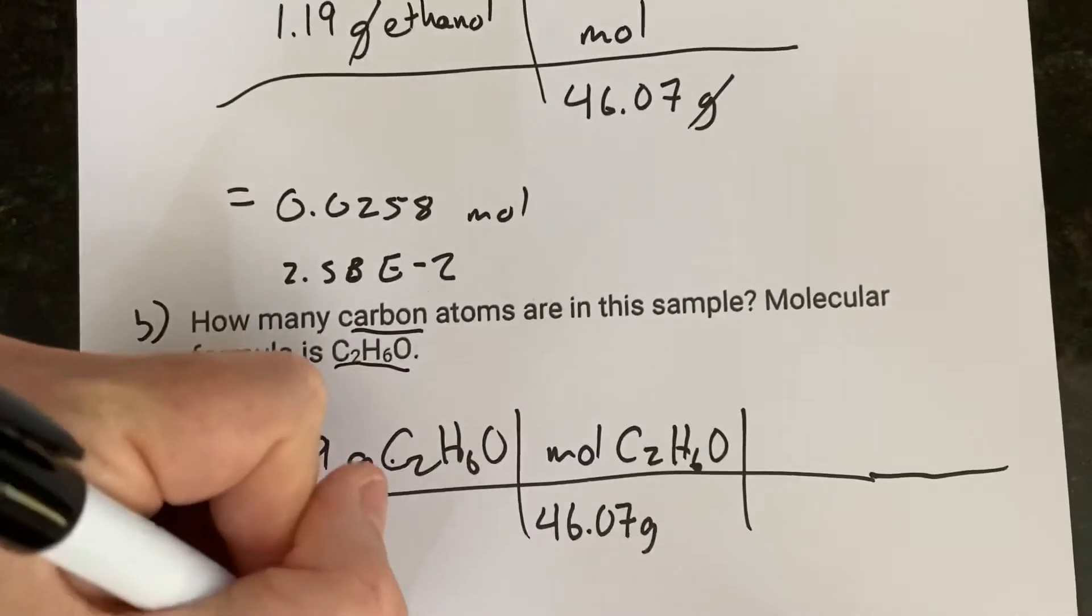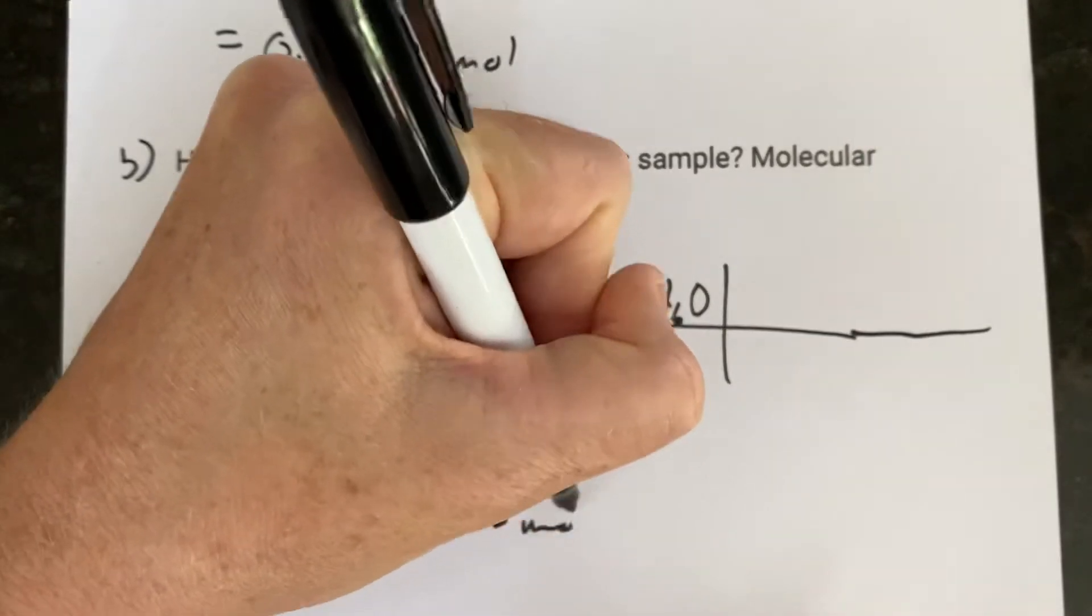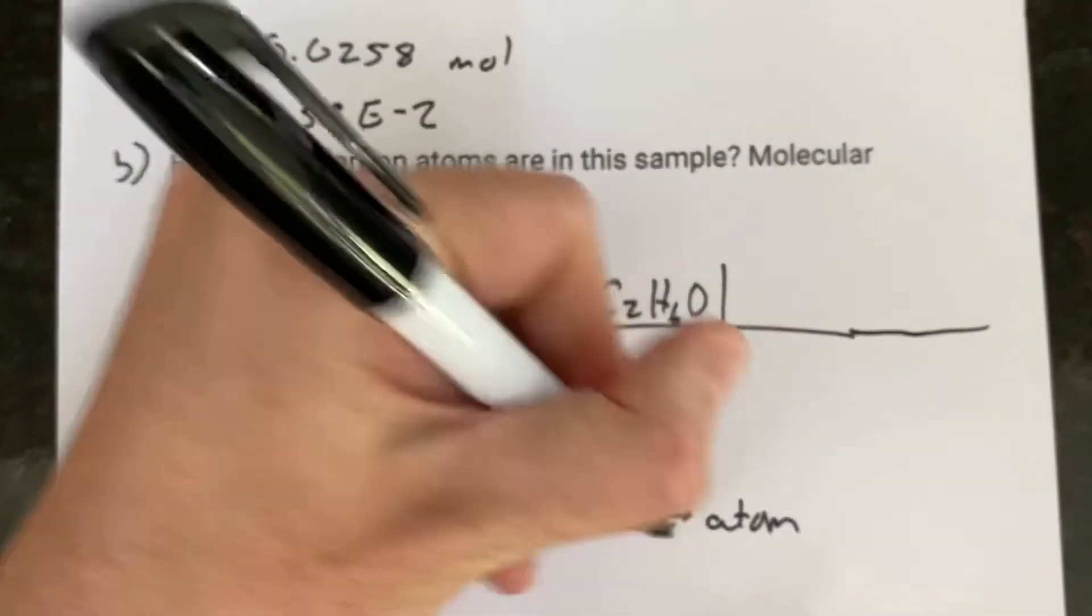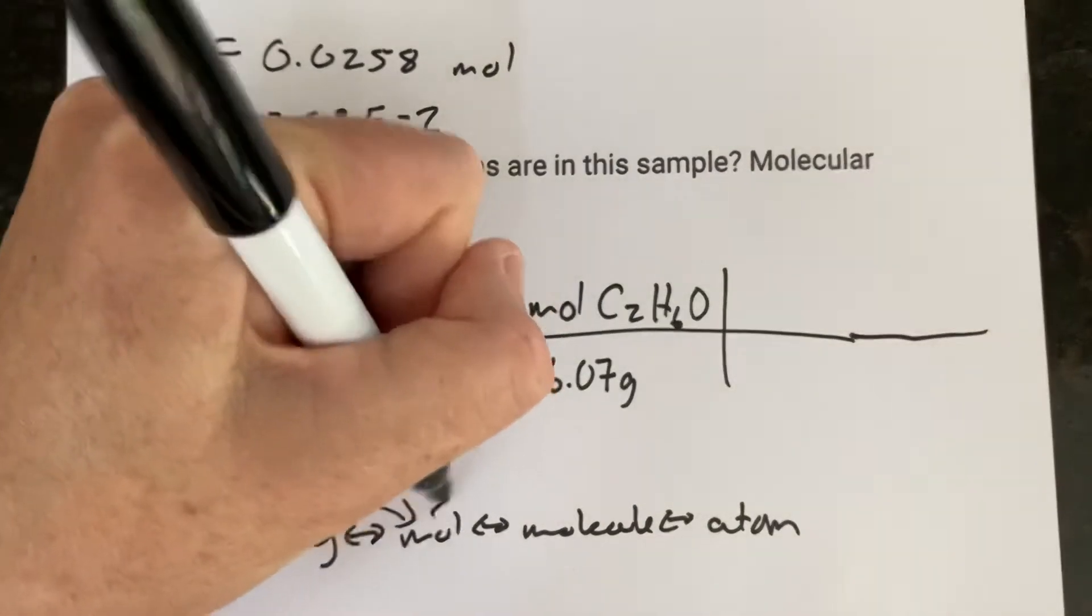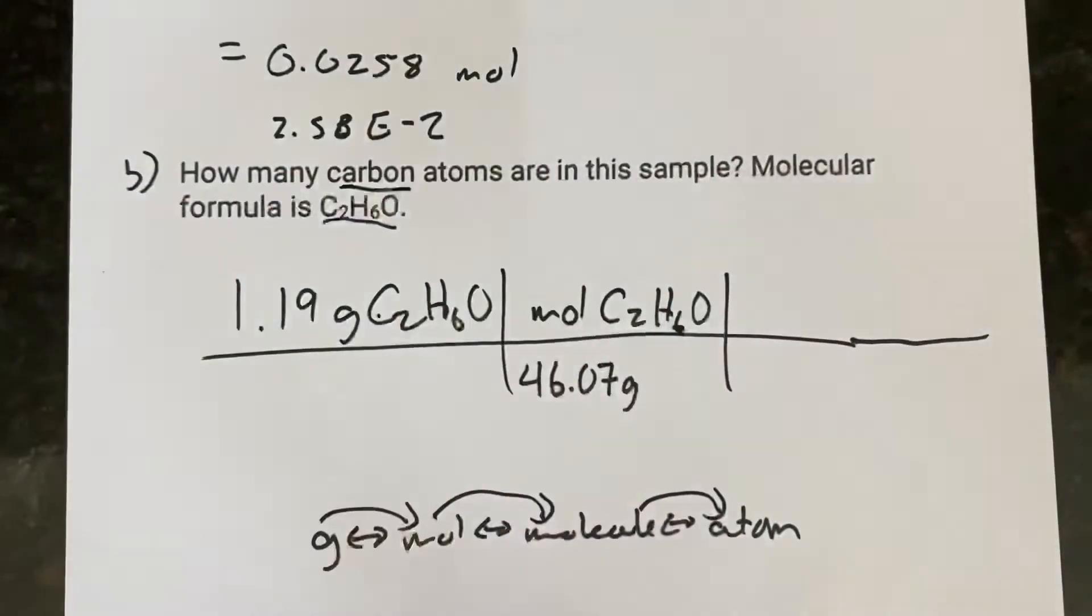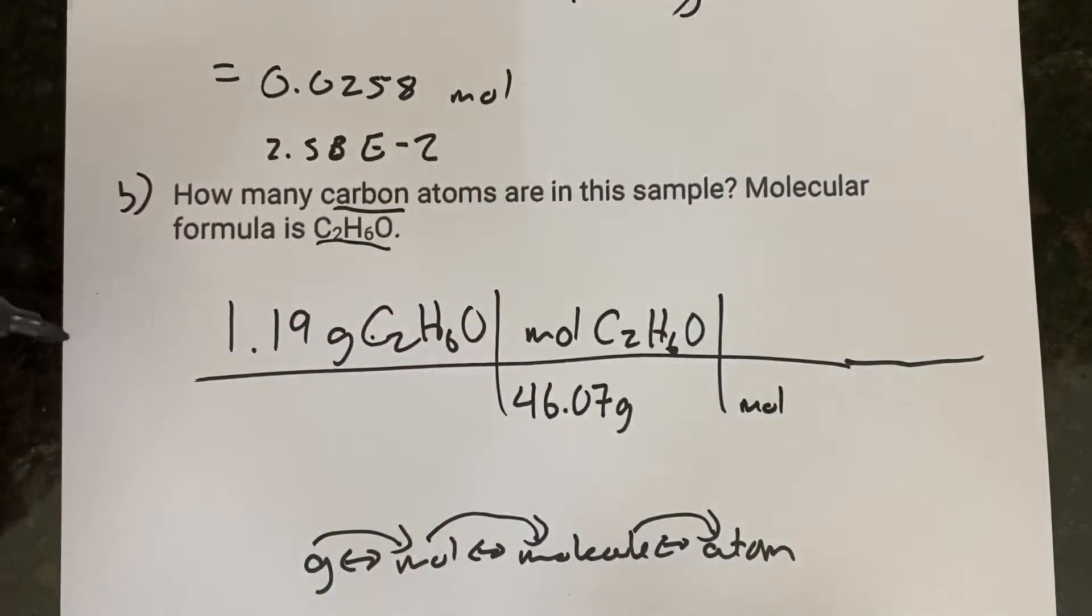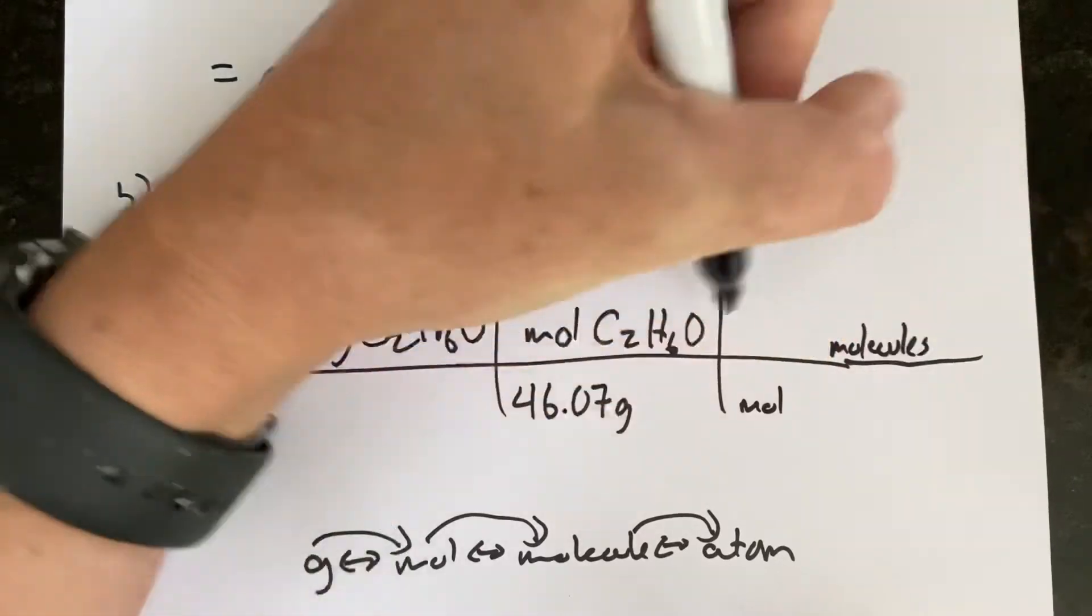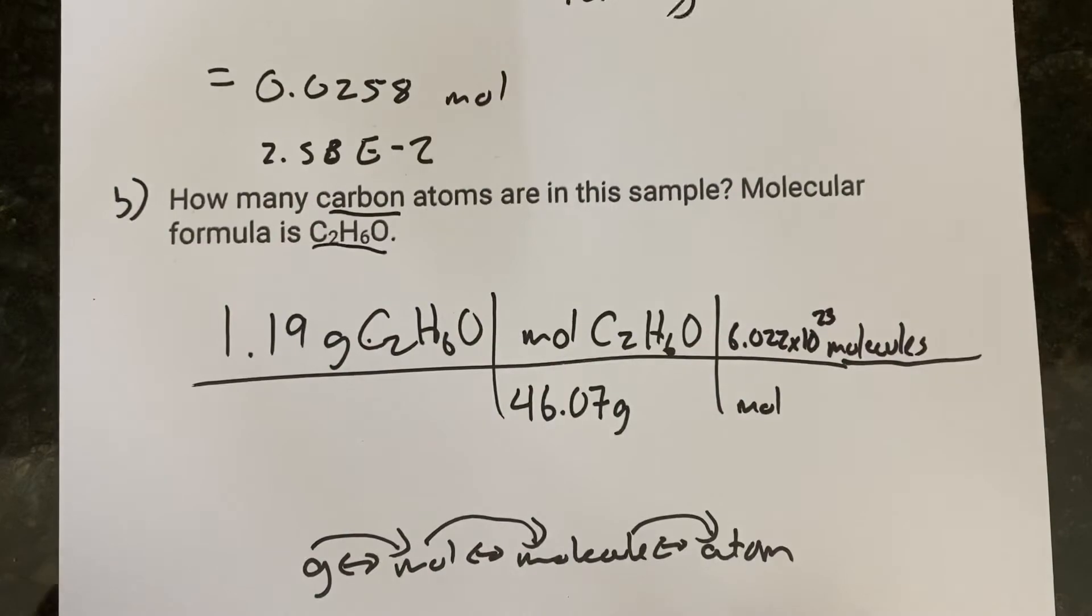And we always want to go from grams to mole to molecule to atom and back, if we've got to go back. So we already went from gram to mole. Now we've got to go from mole to molecule and molecule to atom. So if this is mole, we've got to put mole here. What do we know about moles? Well, we know that a mole has 6.022 times 10 to the 23rd molecules.